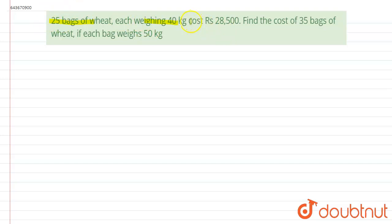25 bags of wheat, each weighing 40 kg, cost rupees 28,500. Find the cost of 35 bags of wheat if each bag weighs 50 kg. We are given 25 bags of 40 kg weight costing 28,500, and we need to find the total cost for 35 bags each weighing 50 kg.